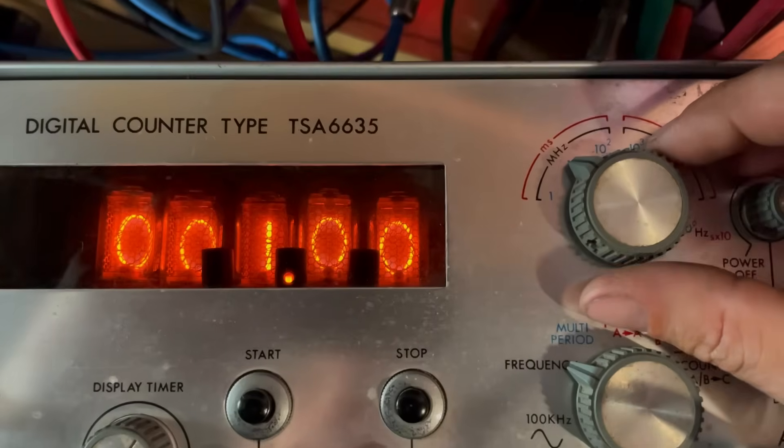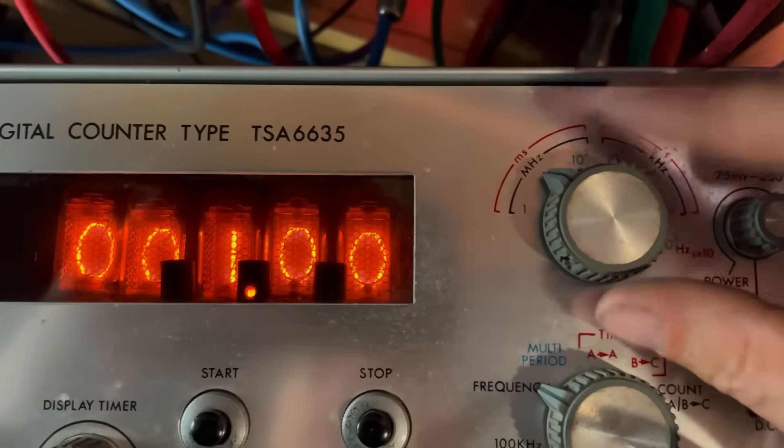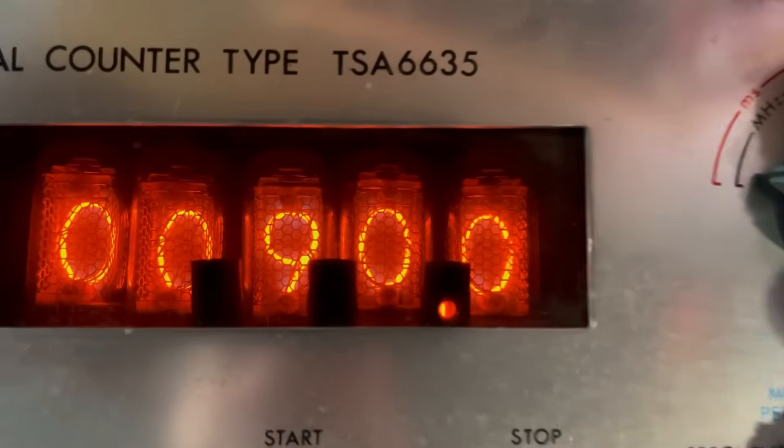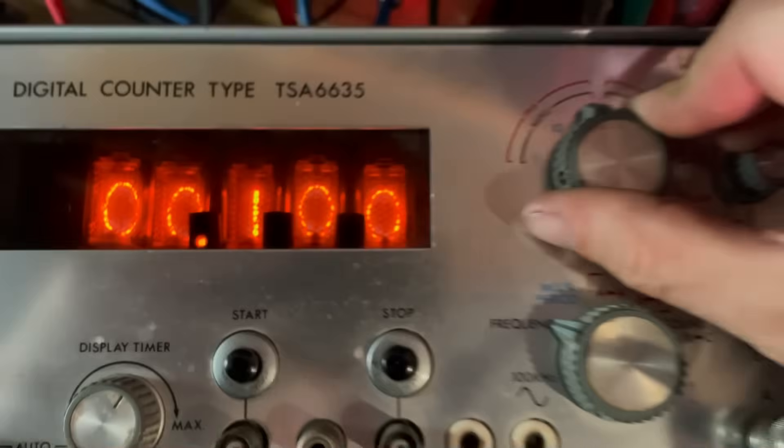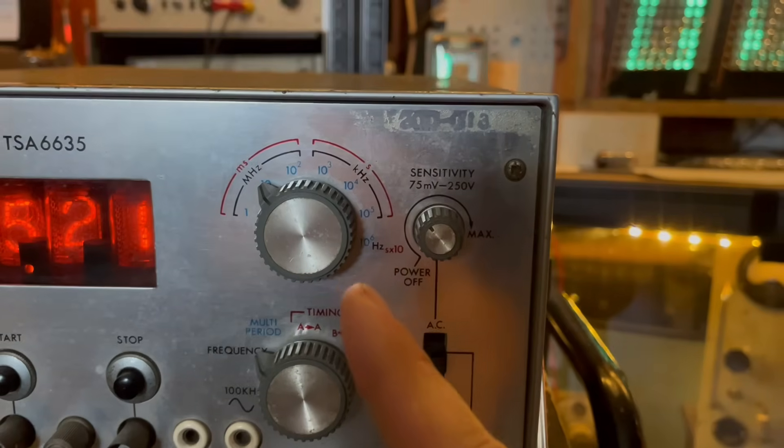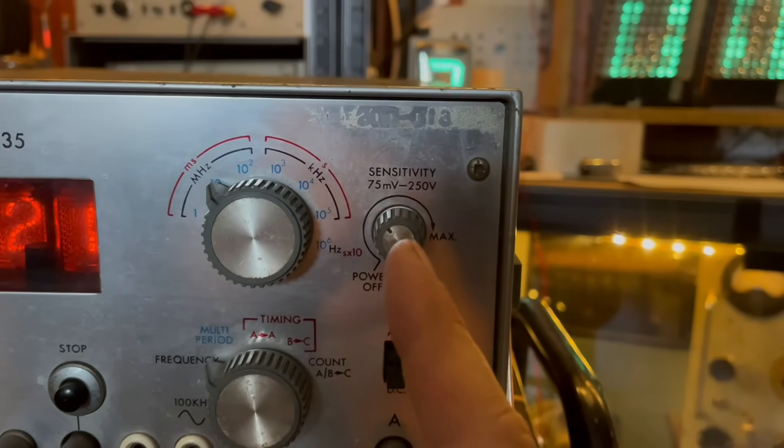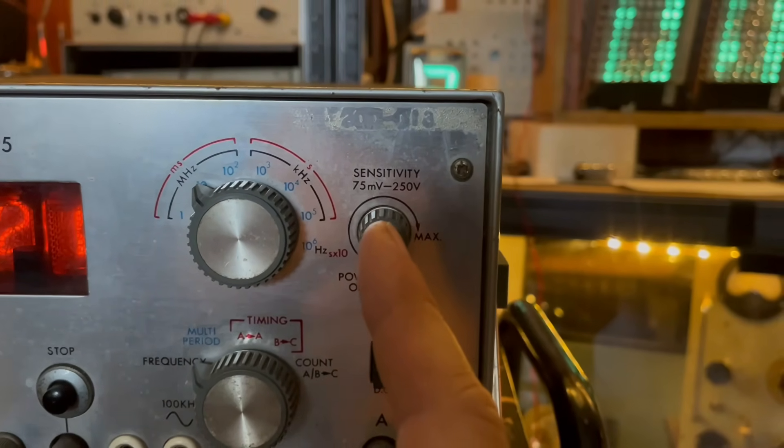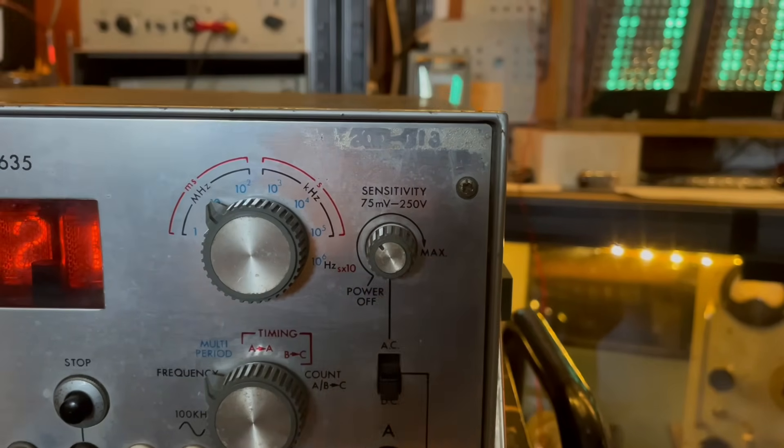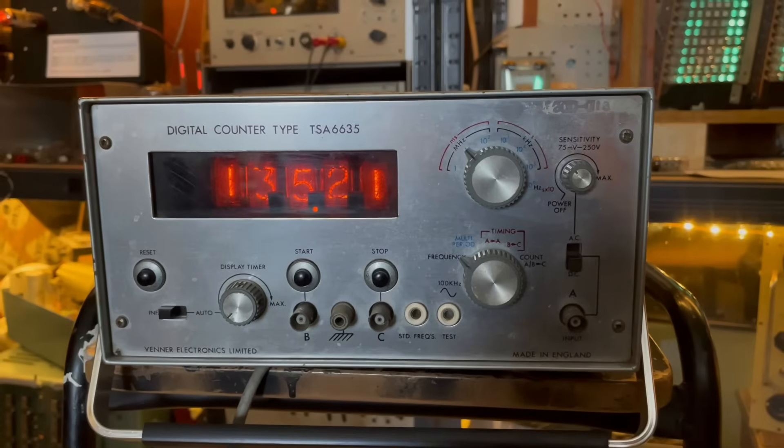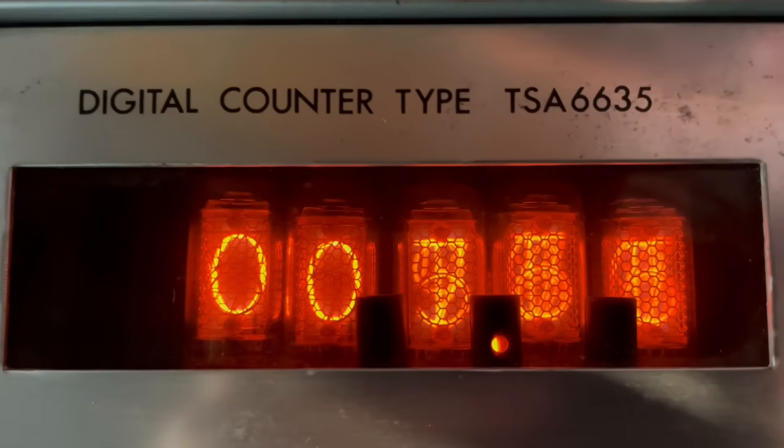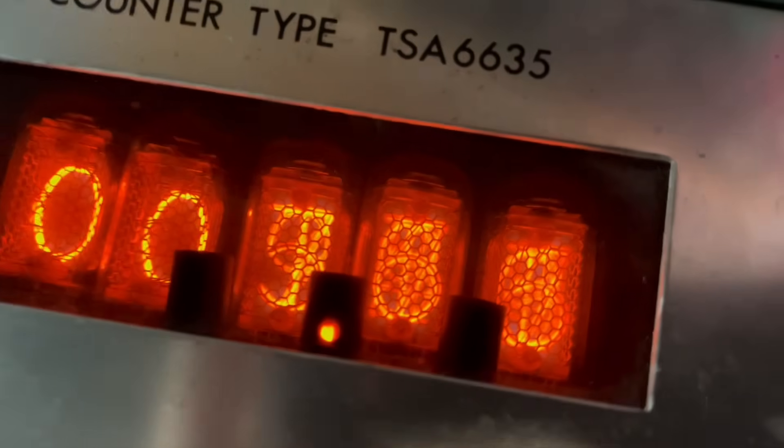You can see here when I change the time division here, the little neon indicator of the decimal point shifts across. Nifty. Got quite a wide range here, you go all the way up to megahertz, and the sensitivity can be set as low as 75 millivolts up to 250 volts. So pretty versatile piece of equipment. Look at this, it's counting so quick that all the displays are just blurred.